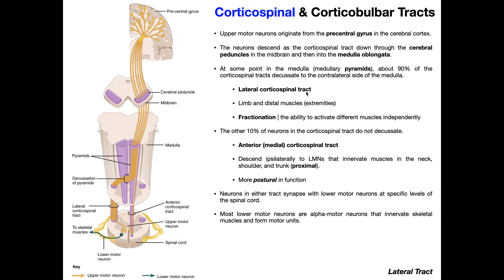After decussation, the lateral corticospinal tract travels down the lateral part of the spinal cord. This upper motor neuron is going to synapse with a lower motor neuron cell body here in the anterior gray horn of the spinal cord. The axon of this lower motor neuron is then going to exit the anterior gray horn, move out of the spinal cord through the anterior or ventral root, move into the spinal nerve and then one of the rami — either ventral or dorsal rami — and go to a skeletal muscle and cause it to contract.